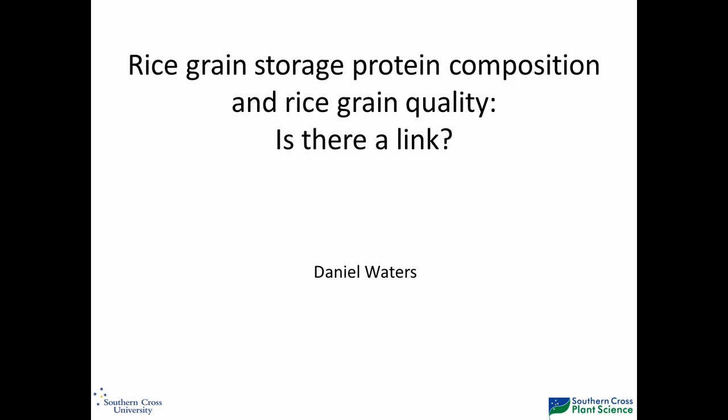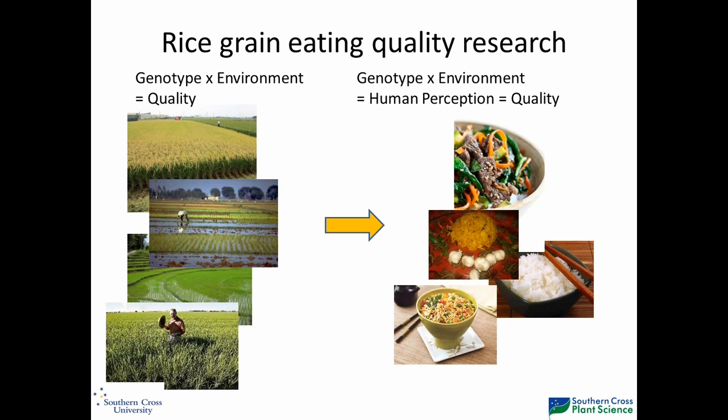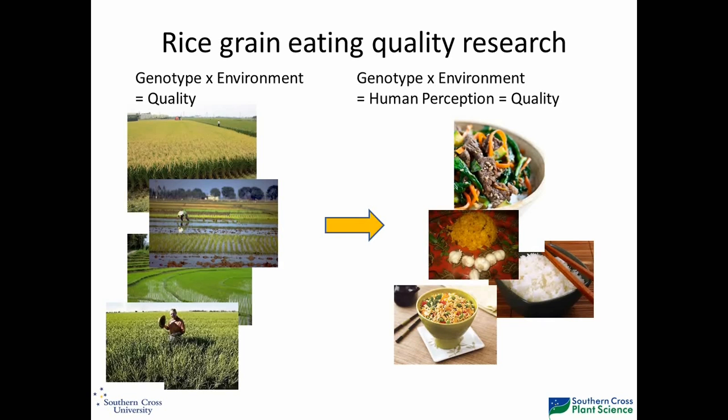First I'll provide a little bit of background context in terms of the area in which I work, and then the work itself. This is really the domain in which I've been working over the years — I've had links with the Australian rice industry and links with the breeding program in the south of Australia. It's really been about providing molecular markers for their breeding program in the context of quality.